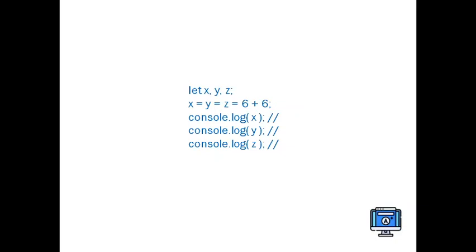The quiz question we have taken three variables: let x, y, and z. x equals y equals z equals 6 plus 6. If we can see this, we can also say this statement or line as a chained assignment.